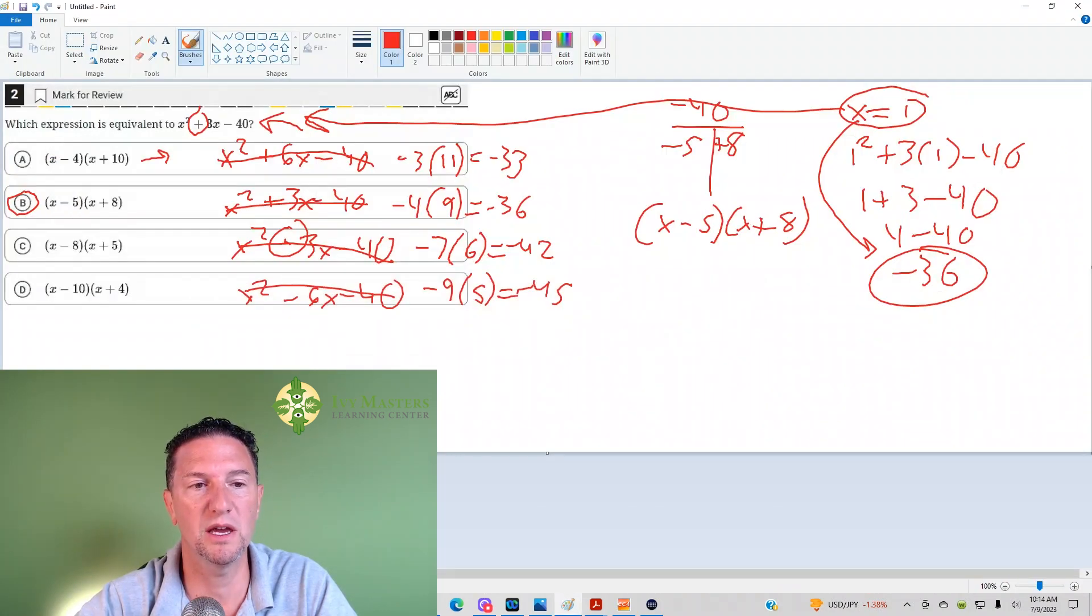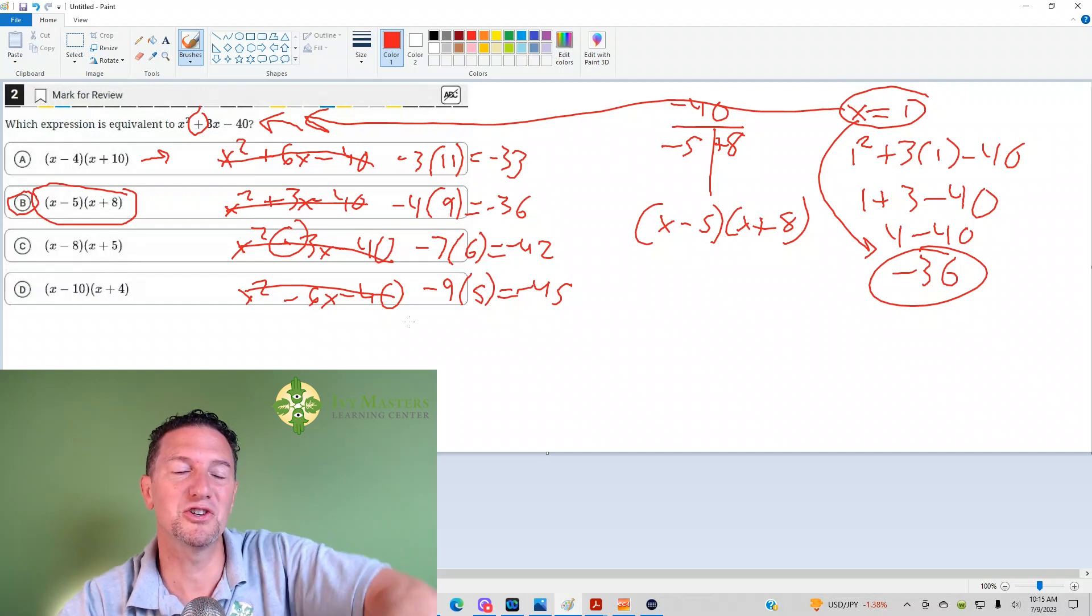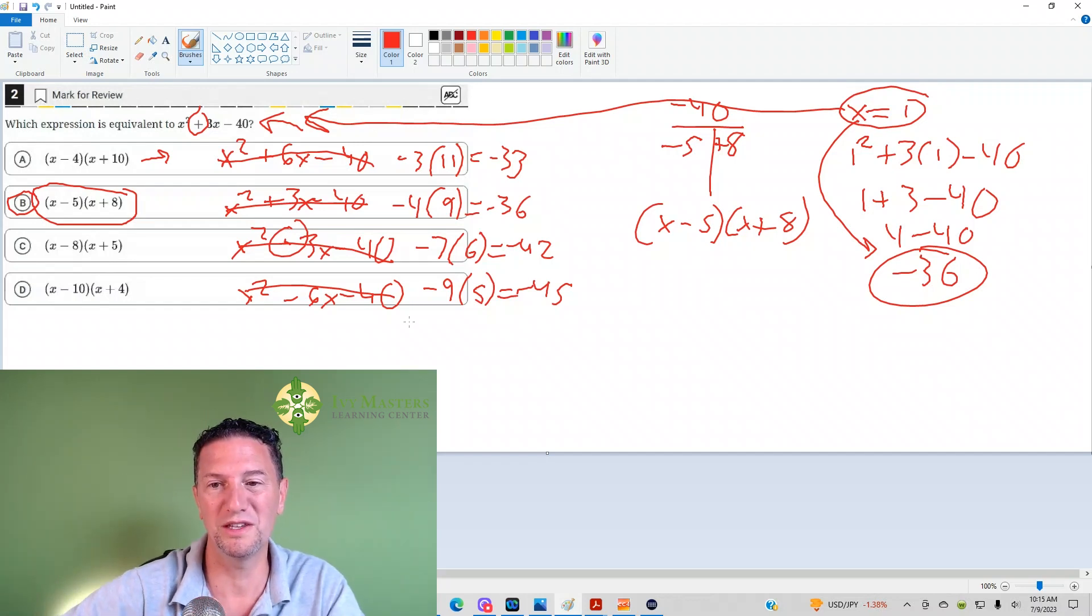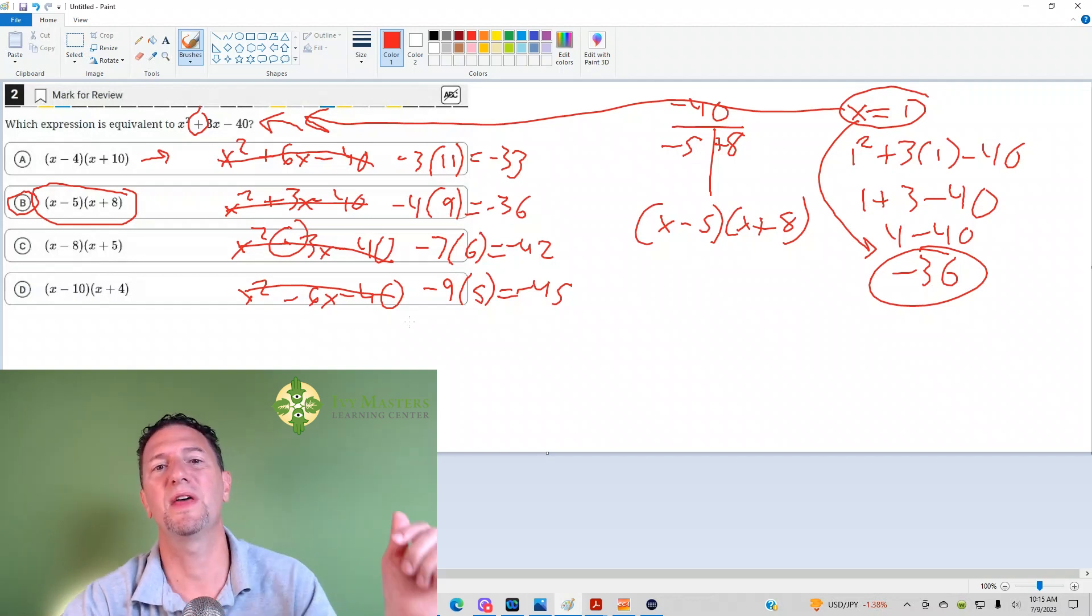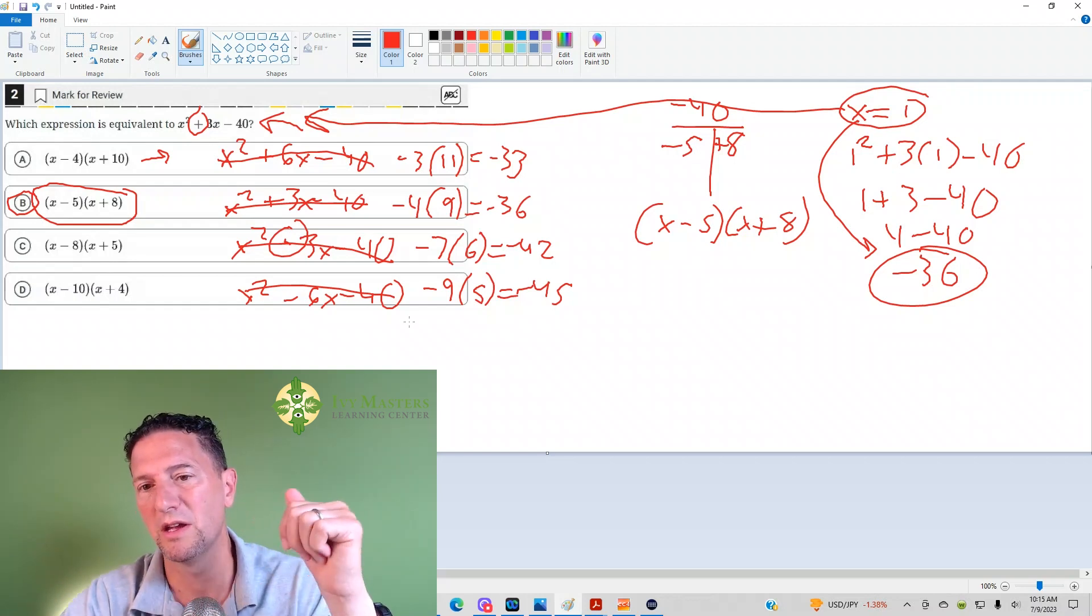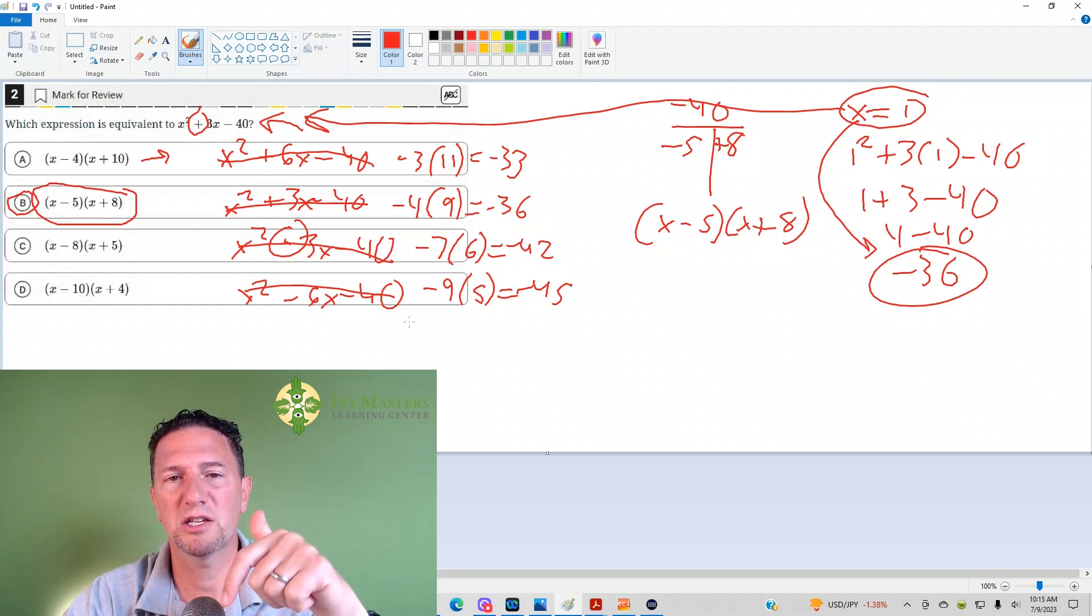And now, once again, when we go back, x plus 8, x minus 5, B is your answer. Thank you for joining us today. If you liked this video, click like. You can share it with someone who has difficulty with these types of questions. Any question you'd like to see answered for any official PSAT or SAT or ACT, leave that in the notes. I'd be happy to shoot a video for you. Click subscribe so you don't miss anything.